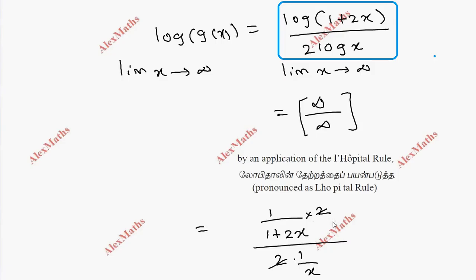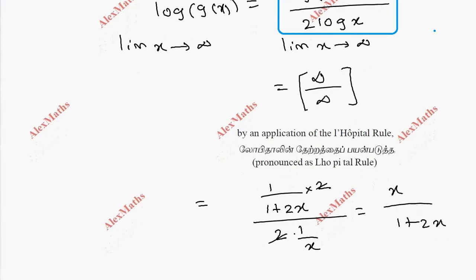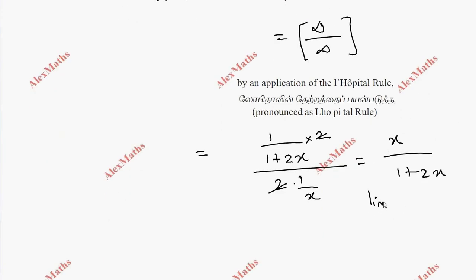The 2s cancel. So we get x divided by (1 + 2x). Now taking the limit as x extends to infinity, this is infinity over infinity again. So we apply L'Hôpital's rule once more.